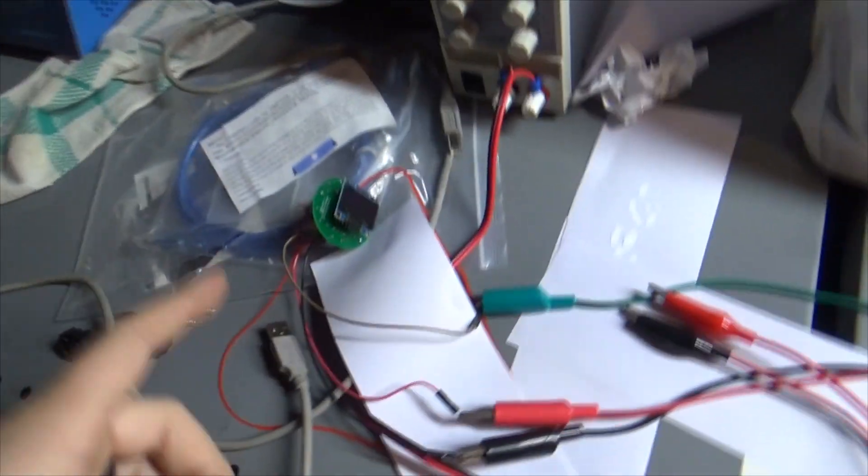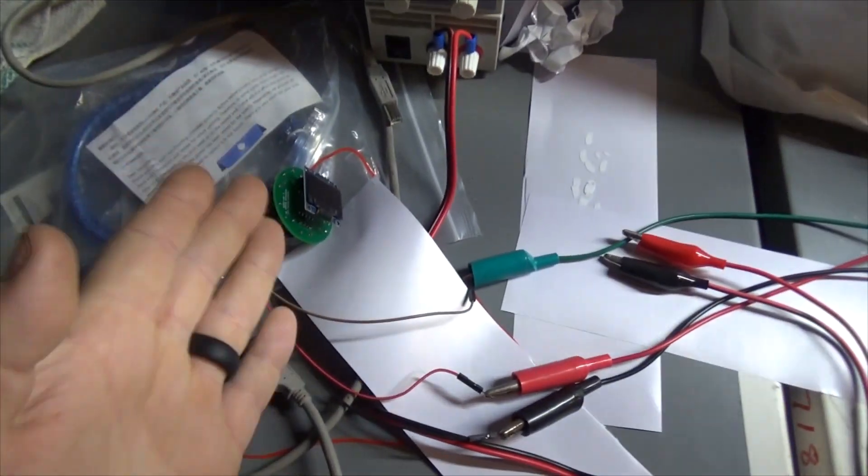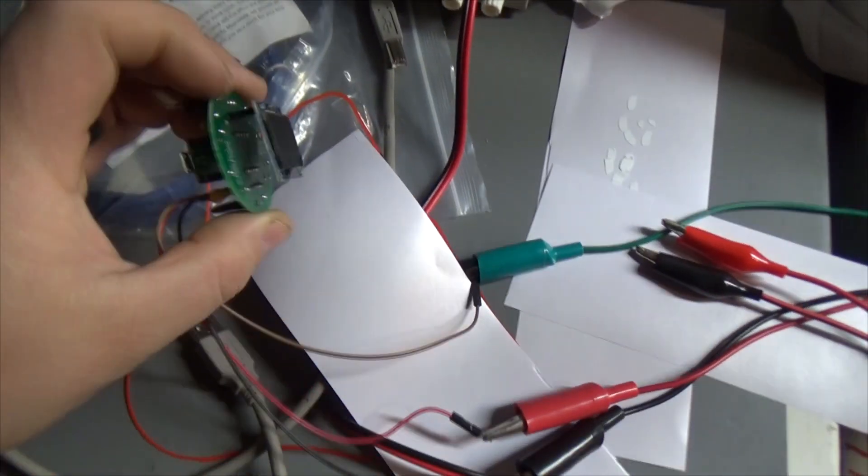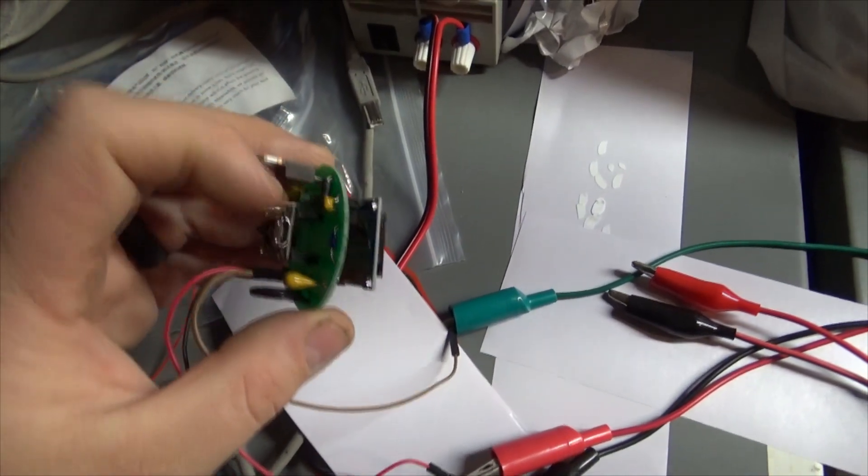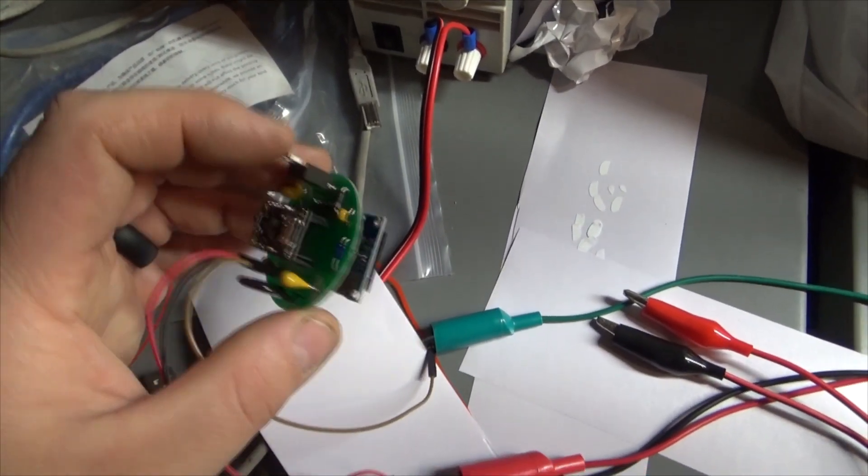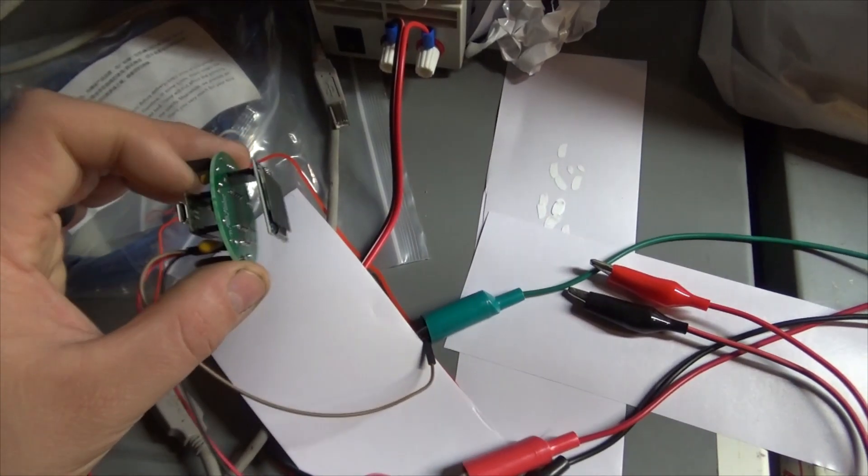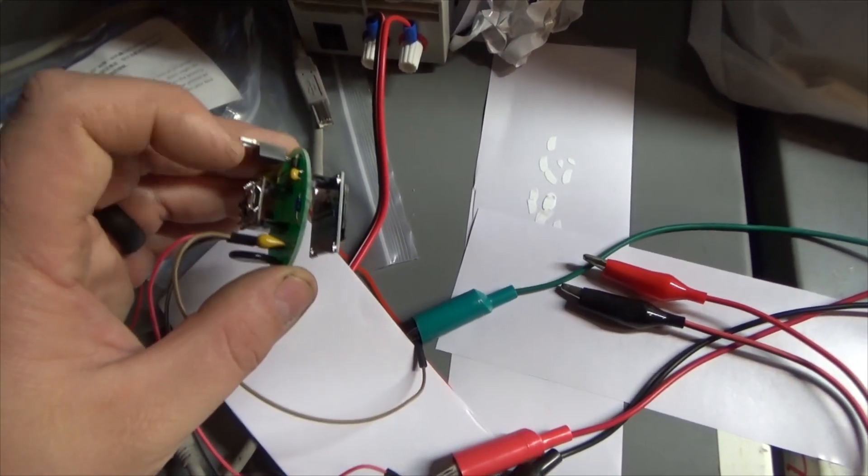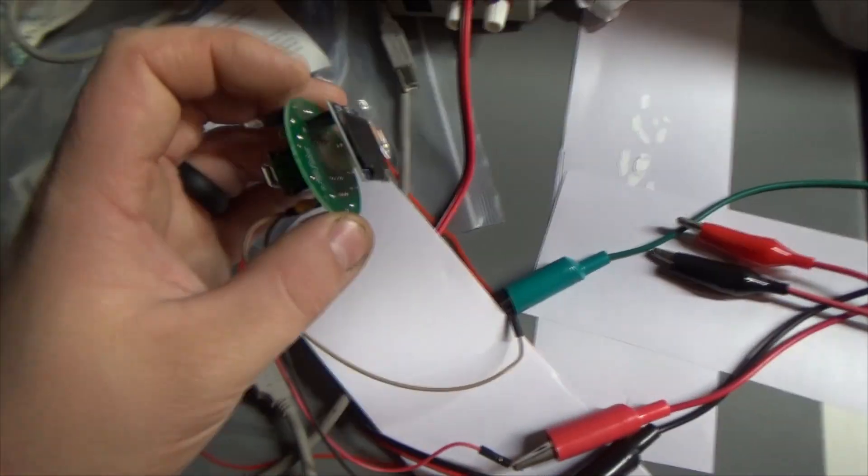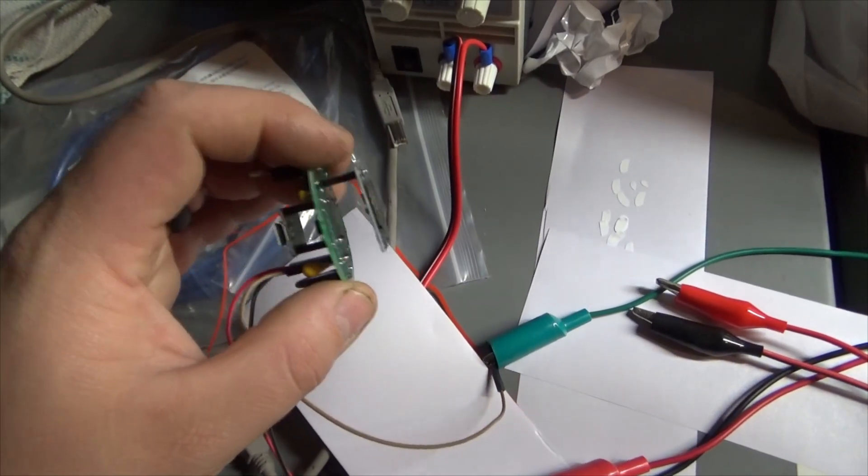This one is just a prototype. That's why everything's kind of standing off of it. I put standoffs on here so I can easily remove the screen, easily remove the trinket just in case I need to pull this off, change the code, which I could change the code with it on the board, but I wasn't sure. So I just wanted to have standoffs on here.